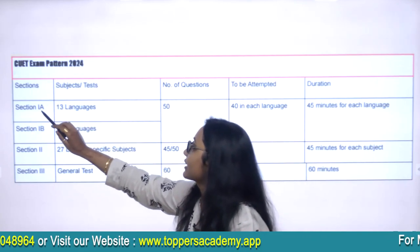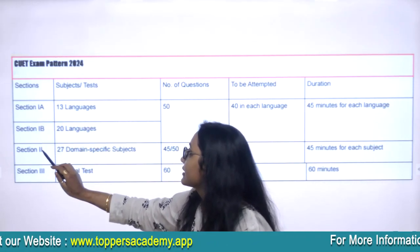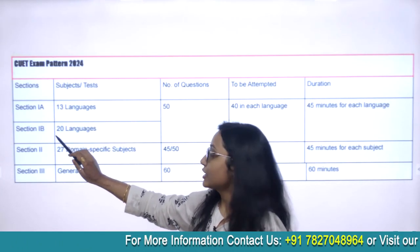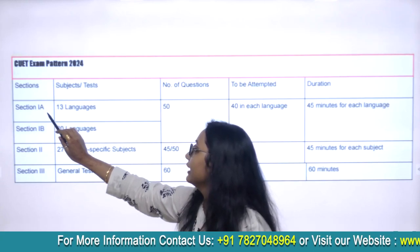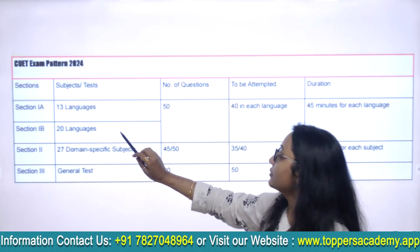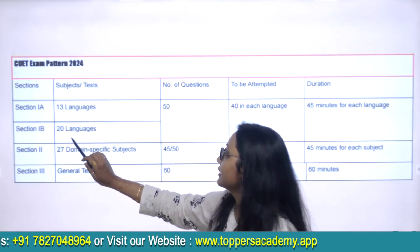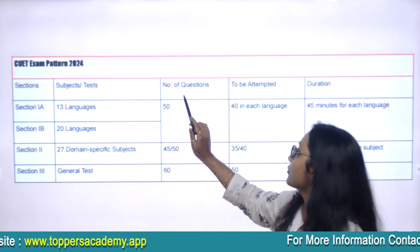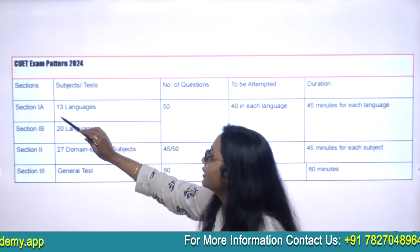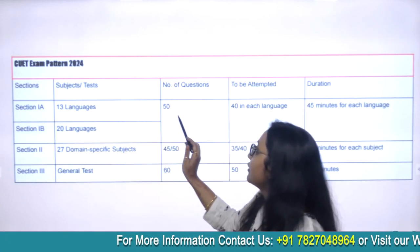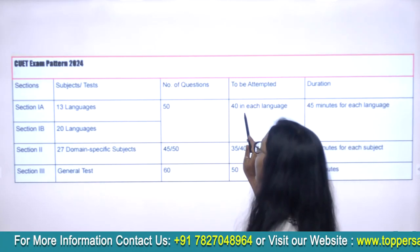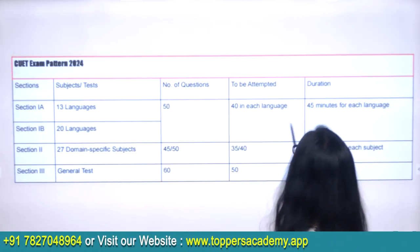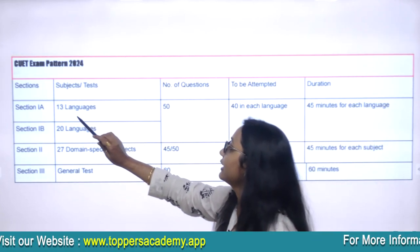There are three sections: section one, section two, and section three. In the first section, there are two subcategories — Category A and Category B. Category A has 13 languages and Category B has 20 languages. The total number of questions in each category A and B is 50, and the student has to attempt at least 40 in each section. 45 minutes will be given for each section A and B.